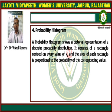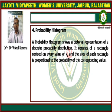Fourth is the probability histogram. A probability histogram shows a pictorial representation of the discrete probability distribution. It consists of a rectangle centered on every value of x, and the area of each rectangle is proportional to the probability of the corresponding value. This kind of histogram is used for discrete probability distributions, where the random variable has finite values.